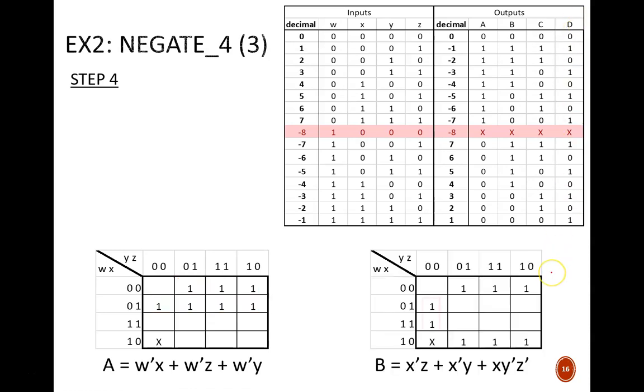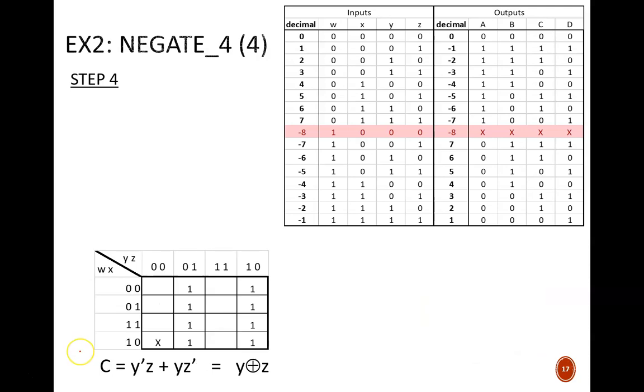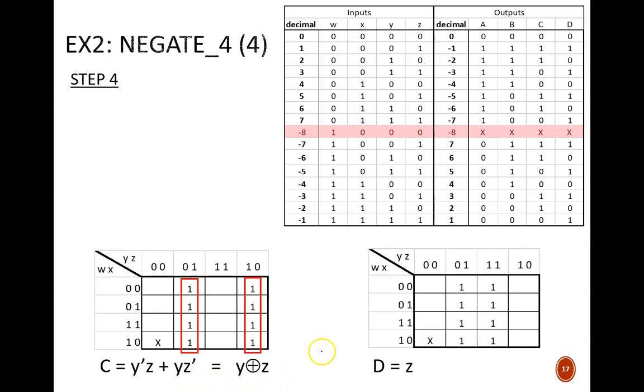For B, we obtain one group of two and two groups of four. Don't forget about wraparound adjacency. This results in the equation shown here. For C, we obtain two groups of four. But don't stop there. Notice the pattern for exclusive OR in this SOP equation and use this simpler equation. Lastly, D is the simplest output. With a single group of eight, we get the equation D equals Z.